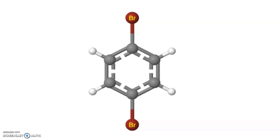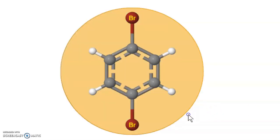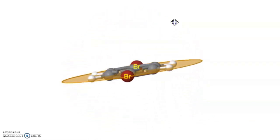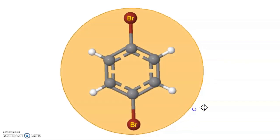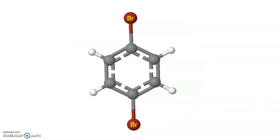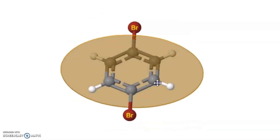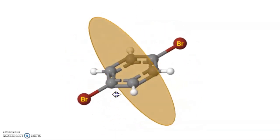Here is another example. The molecule shown here is paradibromo benzene and we all know that this paradibromo benzene is a planar molecule. Consider an imaginary plane that bisects the molecule in the middle and is perpendicular to the molecular plane.